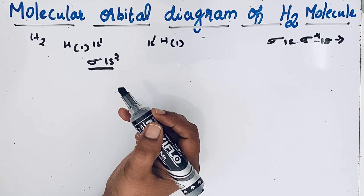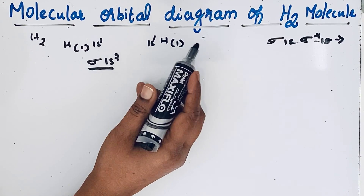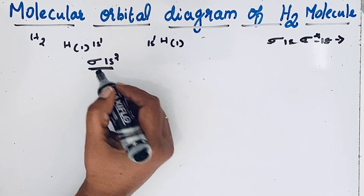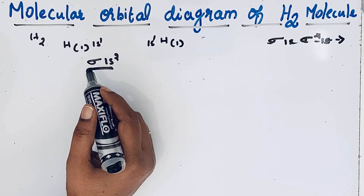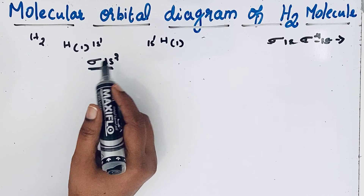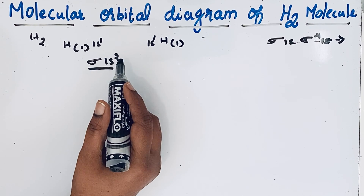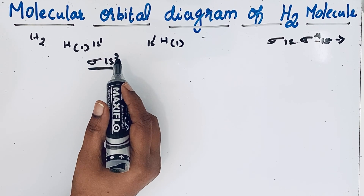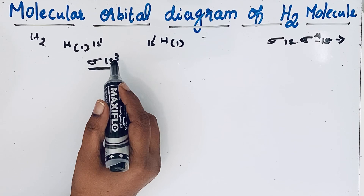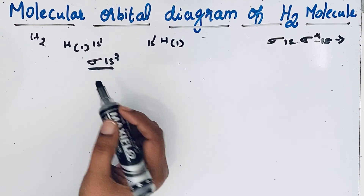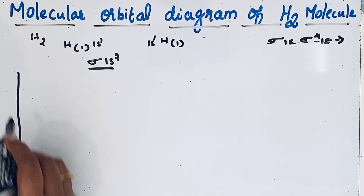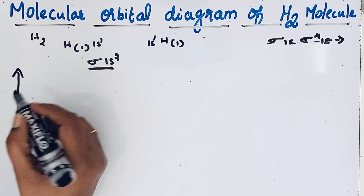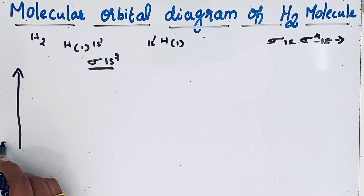Now let us draw the molecular orbital diagram for hydrogen molecule using this configuration. A molecular orbital diagram is a graphical representation of molecular orbitals in which molecular orbitals are represented based on their increasing energy. So let us draw the energy axis.